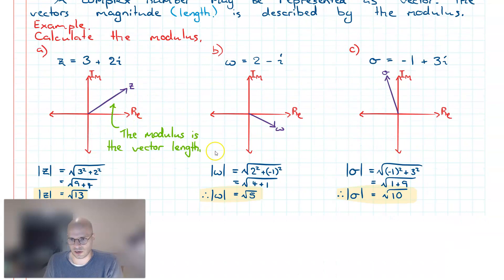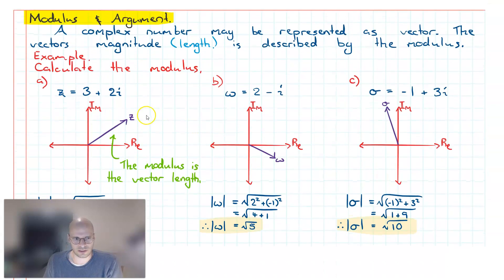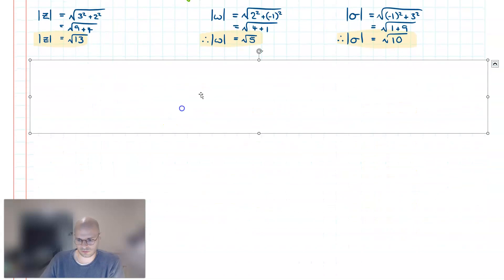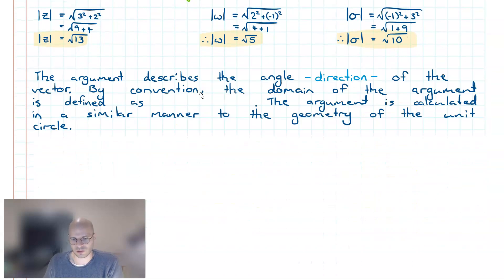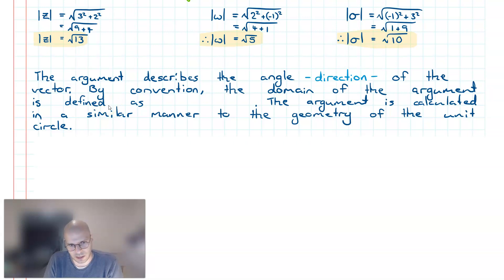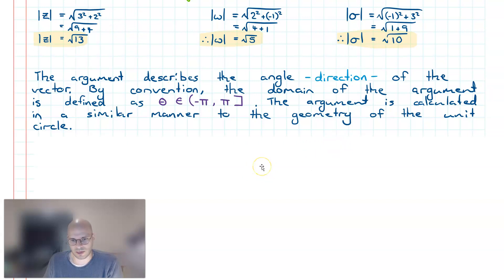Moving on, now that we've looked at the modulus, let's look at the argument. The argument describes the angle — in other words, the direction — of the vector formed by the complex number. By convention, the domain of the argument is defined as theta being between negative pi and up to pi.